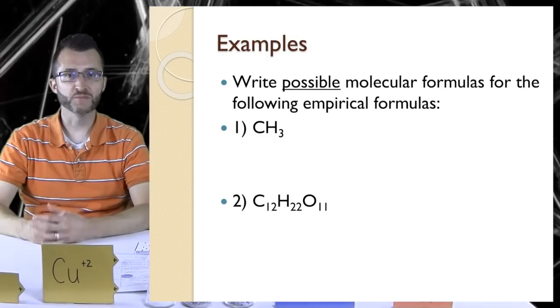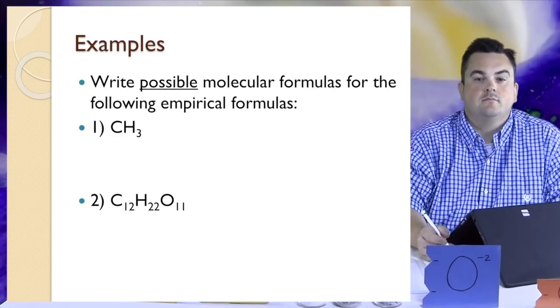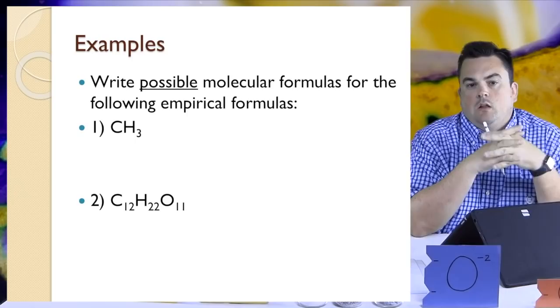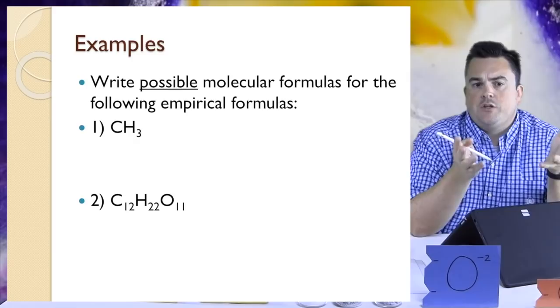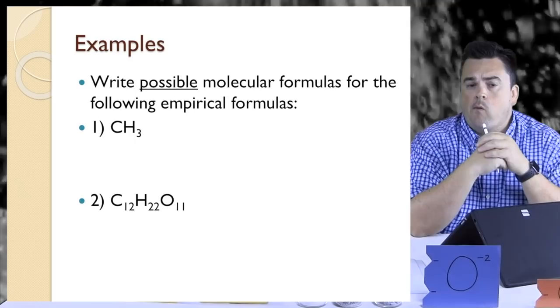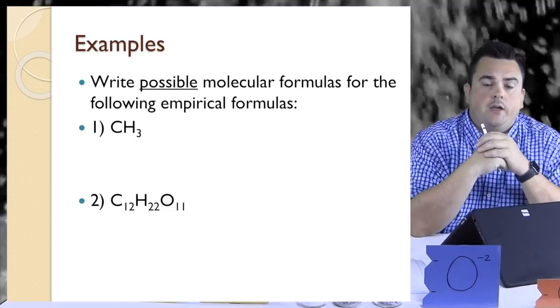Let's continue with some more examples. We're going to write possible molecular formulas for the following empirical formulas. So the empirical formula is the lowest whole number ratio of those elements. If these are empirical formulas, they must have already been reduced. So to get these molecular formulas, I guess I have to multiply them back by a whole number? In fact, we can pick any whole number because the question just says possible molecular formula.